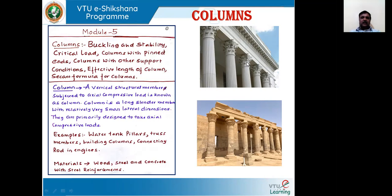Now let us start with the introduction on columns. On the right side diagram, you can see a number of columns supporting the structure. Normally, the columns have a larger length compared to the diameter or lateral dimension. These columns are normally subjected to compressive loads and support the structures, giving a good aesthetic appearance. A column is defined as a vertical structural member subjected to axial compressive load, and the load acts along the axis.